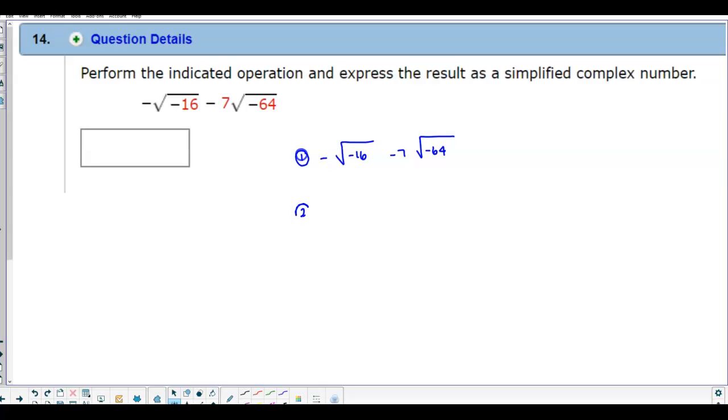We can do this step by step by factoring out the perfect square. So we have negative times the square root of positive 16 times the square root of negative 1, minus 7, we can factor out the square root of 64 times the square root of negative 1.